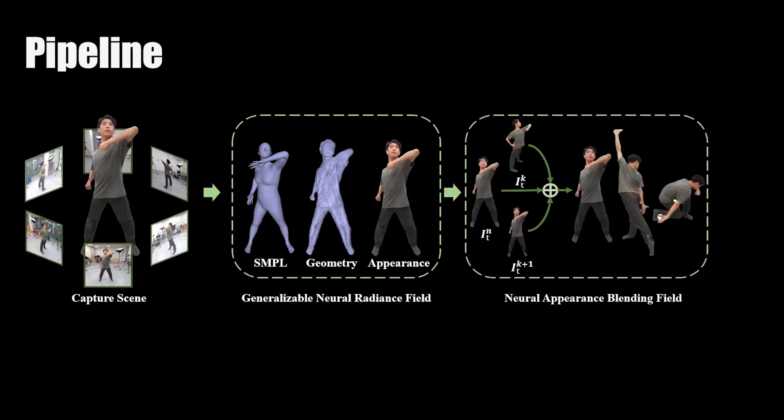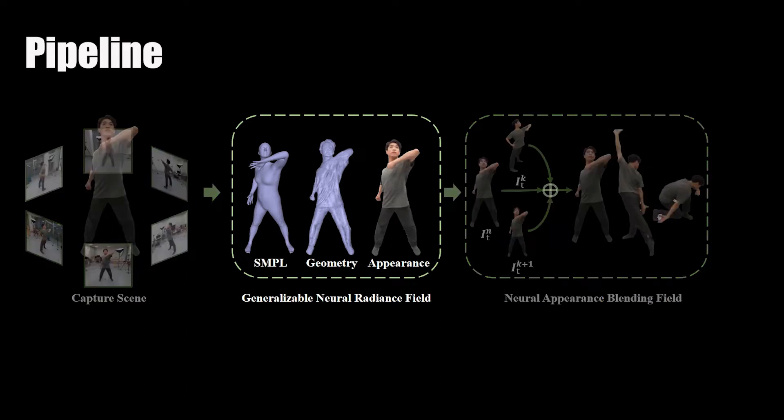Though the Generalizable NeRF outputs human geometry with good quality, synthesized textures may contain artifacts and lack high-frequency details. Then we use a novel Neural Appearance Blending Scheme to refine texture details by aggregating colors from neighboring views.